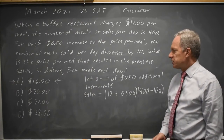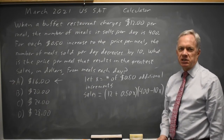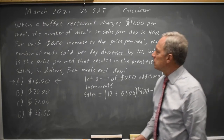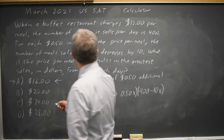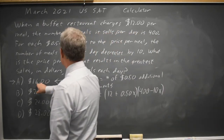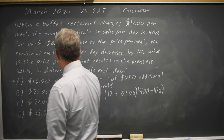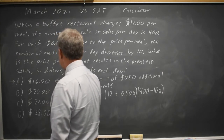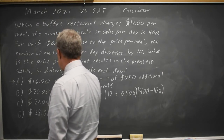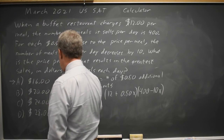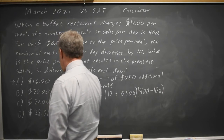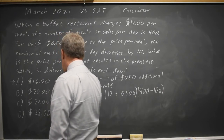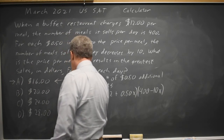I can evaluate this on either a scientific calculator or a graphing calculator, where again I can see that x equals 8 gives $16, x equals 16 gives $20, x equals 24 gives $24, and x equals 32 gives $28.